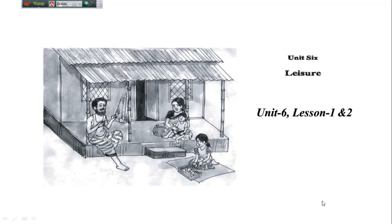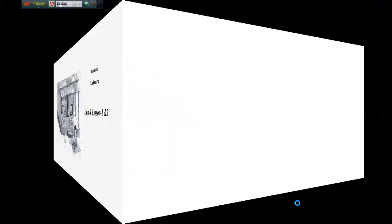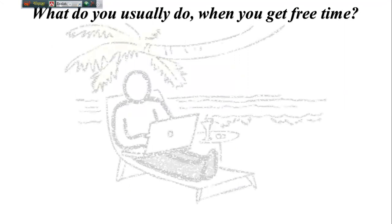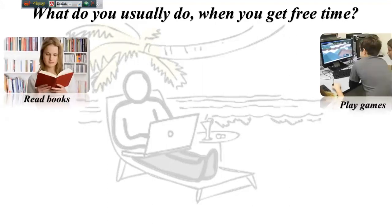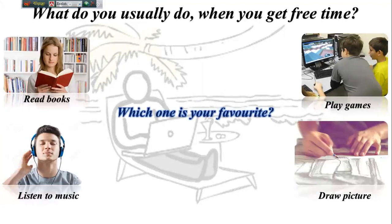Today's topic is about leisure, from unit 6, and we will discuss two lessons: Lesson 1 and Lesson 2. Dear girls, again look here. What do you usually do when you get free time? I think you all know leisure — you can also say free time. I have shown you five activities. Which one is your favorite? Some of you may like to read books, play games, draw pictures, or listen to music. There are other activities you may choose from.